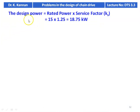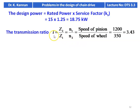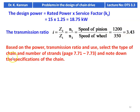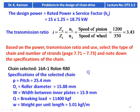The design power equals rated power into service factor: 15 × 1.25 = 18.75 kilowatt. The transmission ratio i = N1/N2 = 1200/350 = 3.43. Based on the power, transmission ratio, and use, we select the type of chain and number of strands from page numbers 7.71 to 7.73. The chain selected is 16A1 roll-on R — where R stands for single strand. It is a single strand chain of the R series.